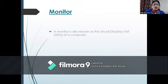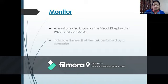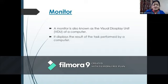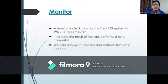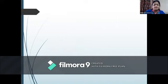Monitor. A monitor is also known as the Visual Display Unit (VDU) of a computer. It displays the result of the task performed by a computer. We can also watch movies and cartoon films on a monitor. The output seen on the monitor is called the soft copy.